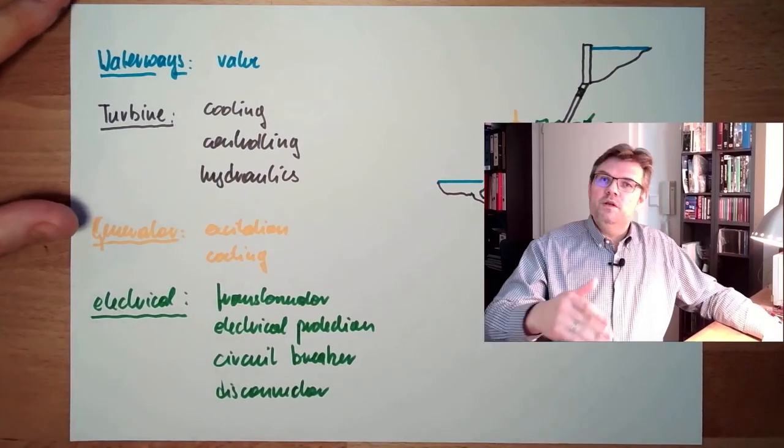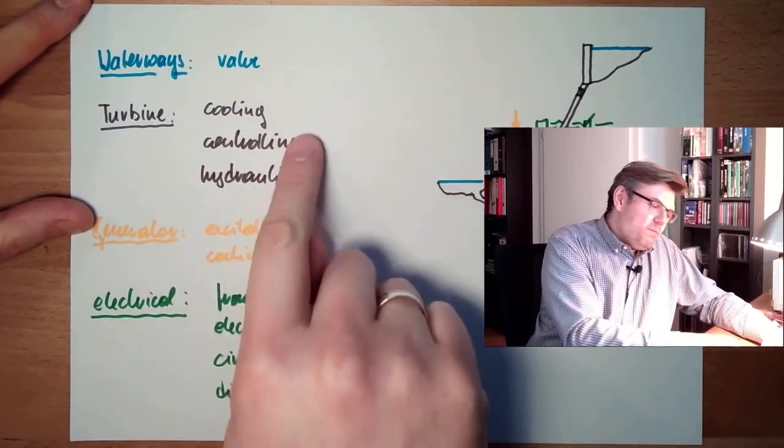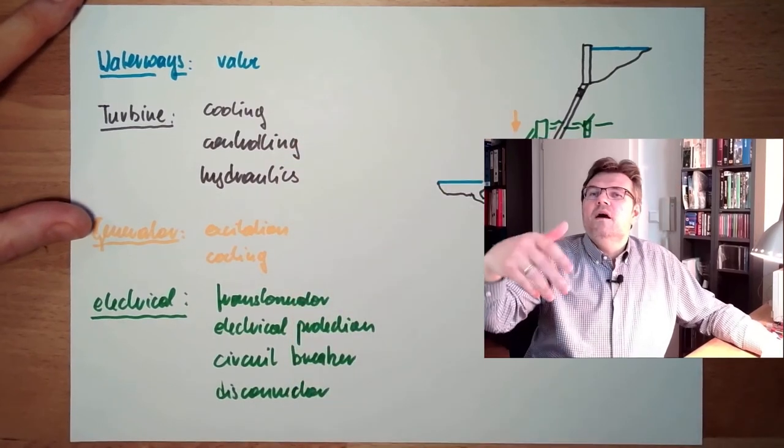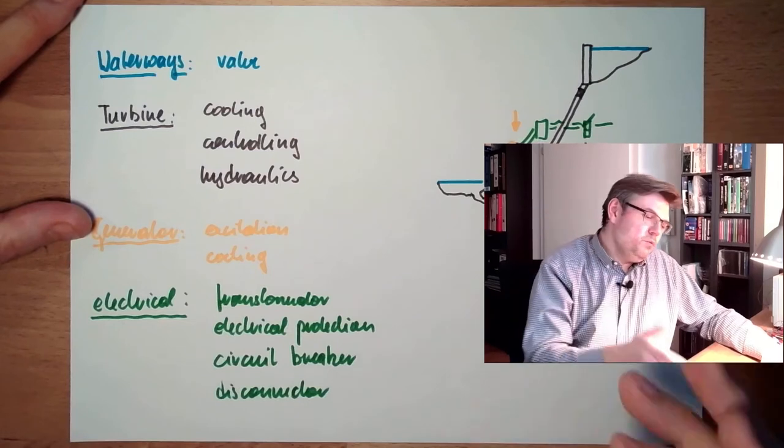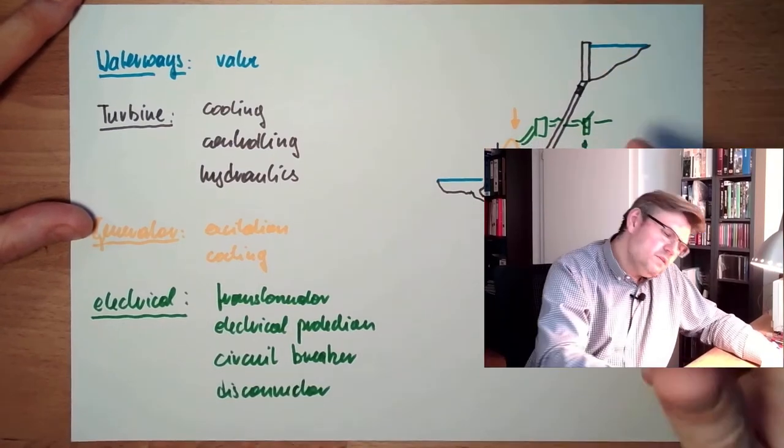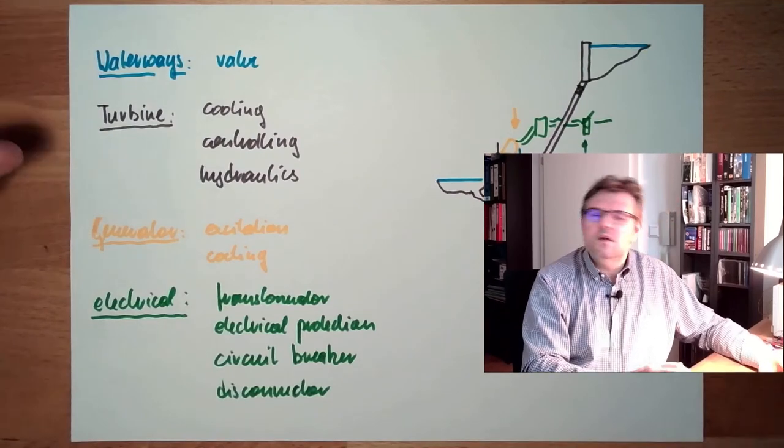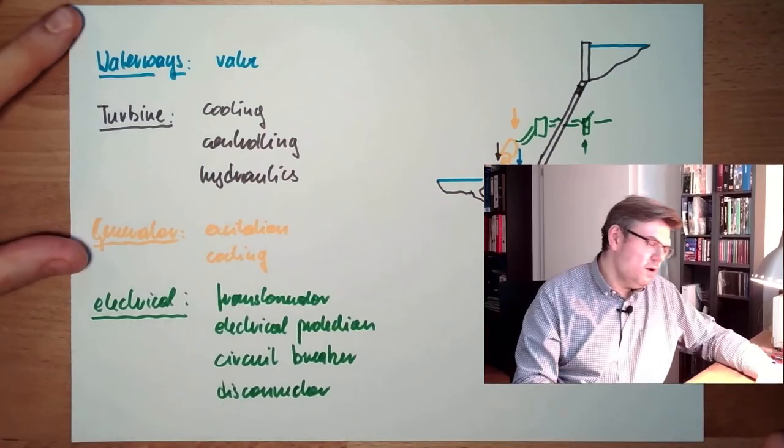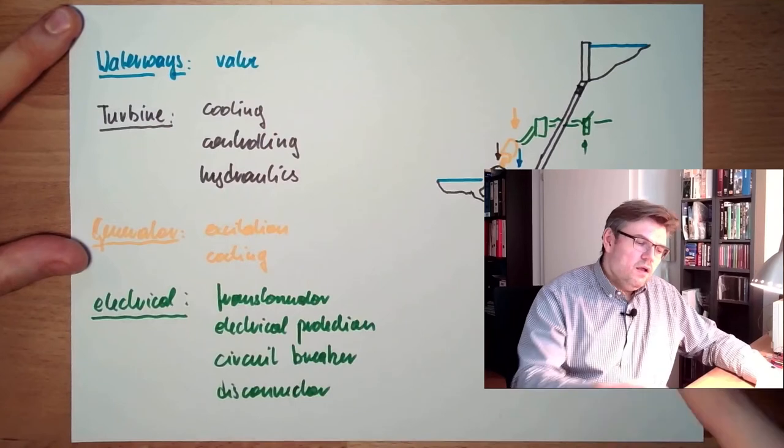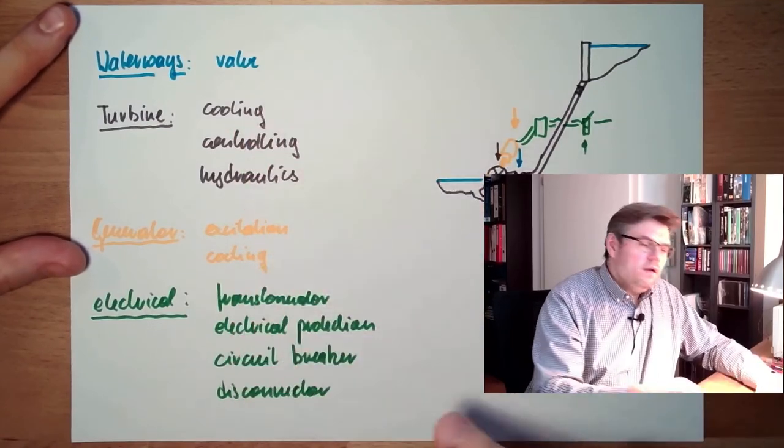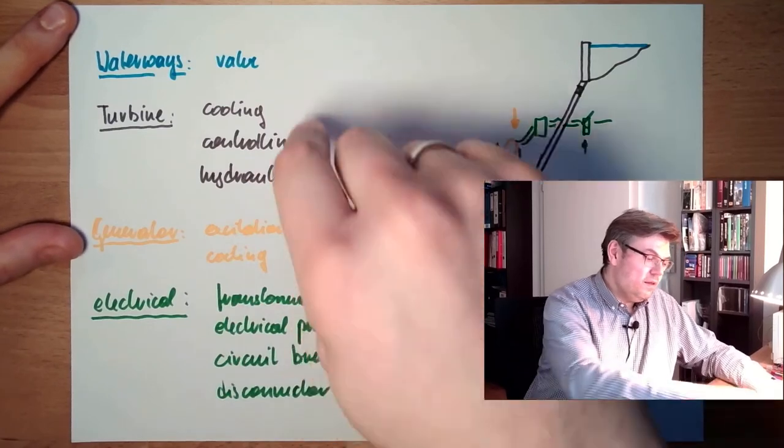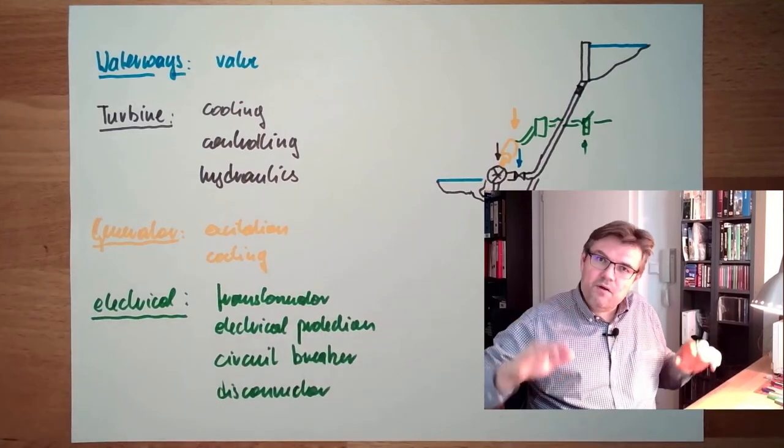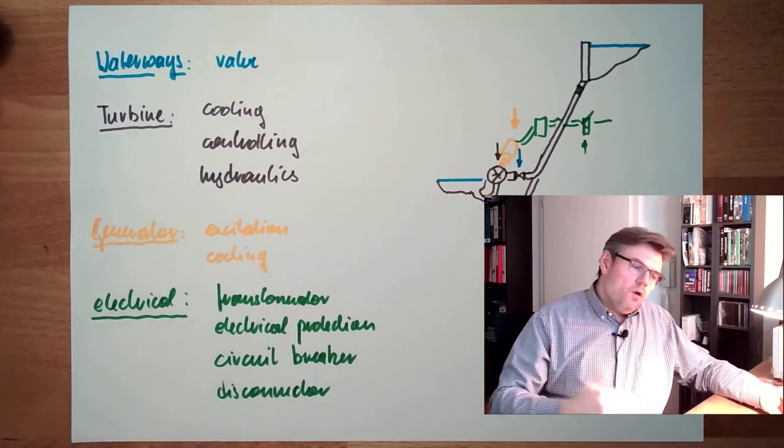In operation we need then to select between different control modes. We can use power control, then we say to the controlling machine how many megawatts we want to have. Or we can switch to flow control, then we switch how many cubic meters per second and so on. There are different control modes. In standstill we also have to follow a procedure to turn it off. So the turbine needs to go to base load. Then the circuit breaker is open. Turbine needs to maintain the speed 100%. Then the valve should be closed. Turbine is closed. Excitation system shut down. Everything in the right order to go from operation to standstill.